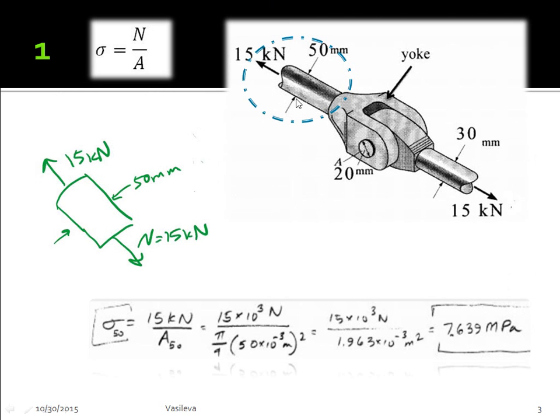Okay, so the first thing I started off with is finding the average stress, the normal average stress right here. So I cut this part right here, and we have the 15 kilonewtons pointing that way. That means our normal force is going to be 15 kilonewtons pointing this way.